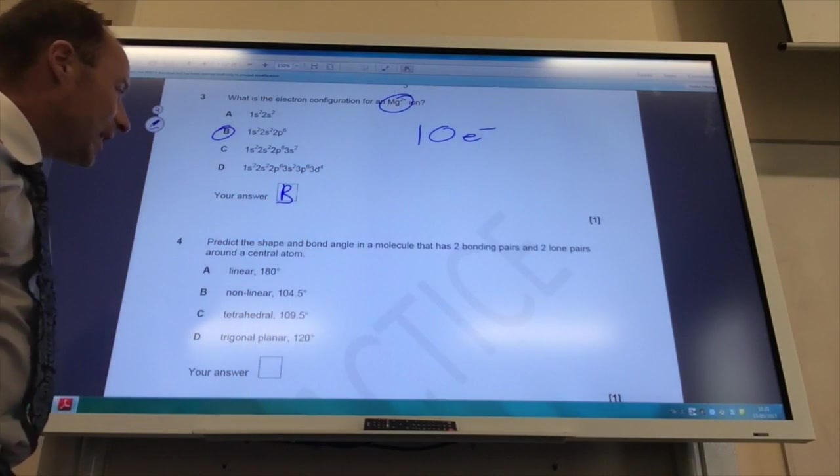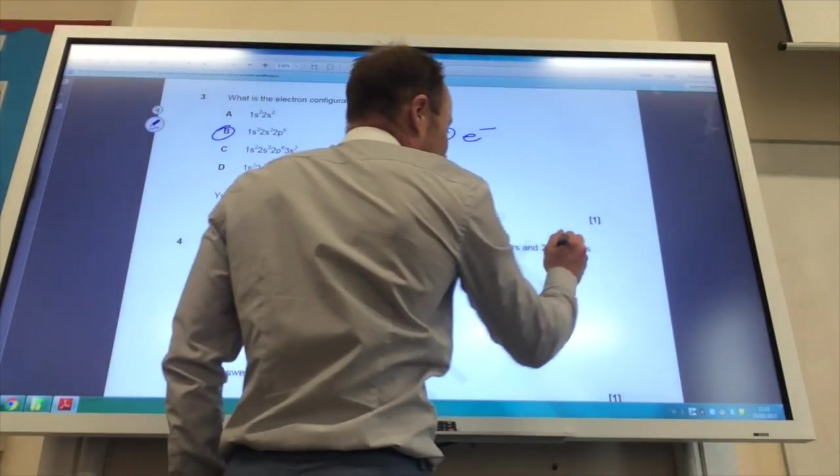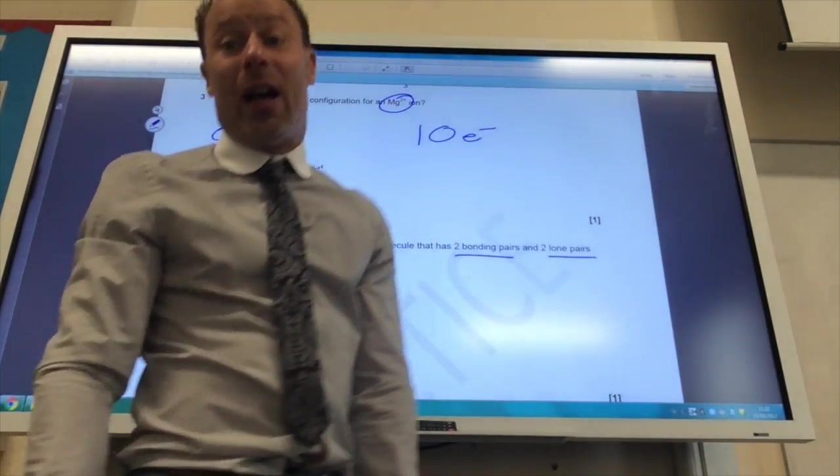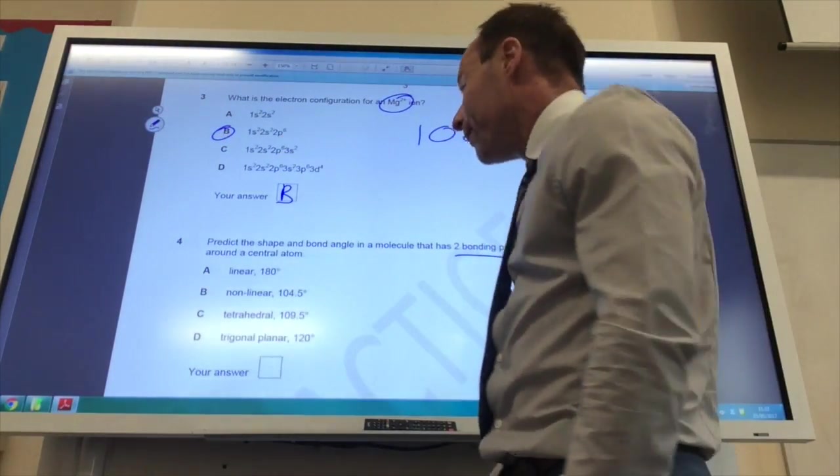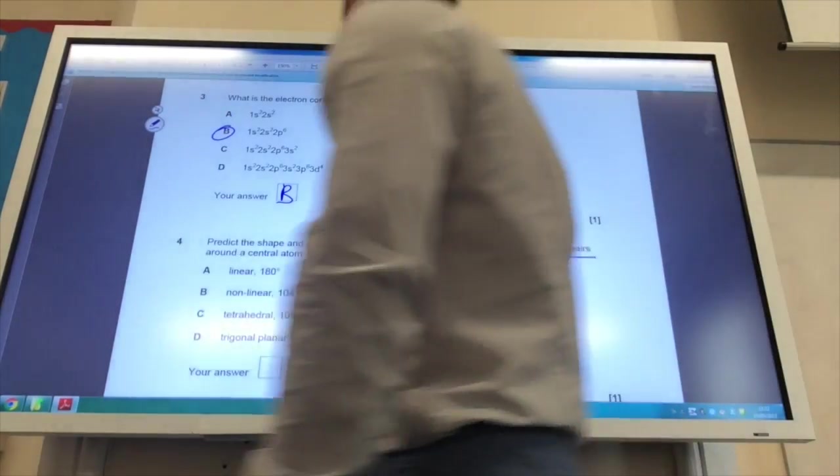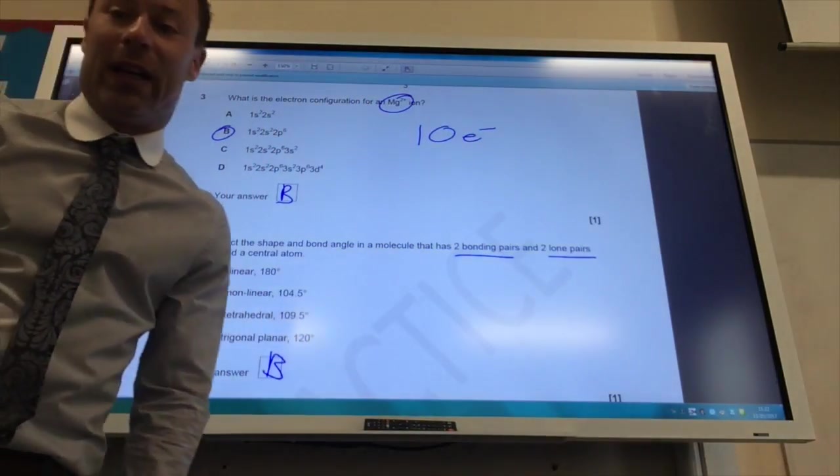Question 4. What is the shape and bond angle of a molecule that's got two bonding pairs and two lone pairs? Well, this one should be familiar to you. It is of course water. If you've got two bonding pairs, two lone pairs, it is of course non-linear. So the answer to question 4 is B.